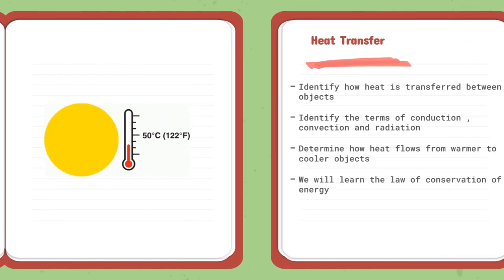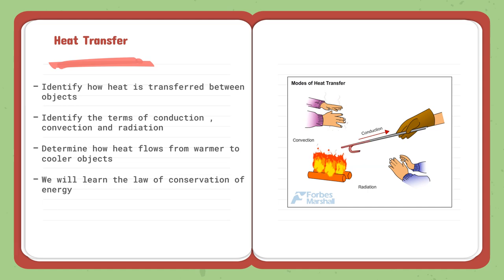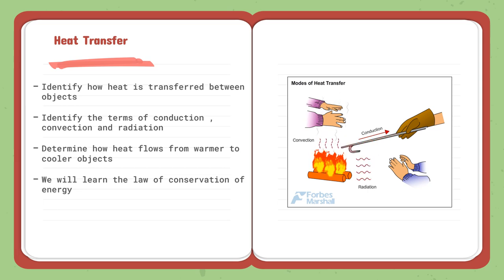Moving on to the second lesson, which is heat transfer. We are going to know how heat is transferred between objects. There are three types: convection, conduction, and radiation. We are going to identify these terms, determine how heat flows from warmer to cooler objects, and learn that there is a law of conservation of energy.